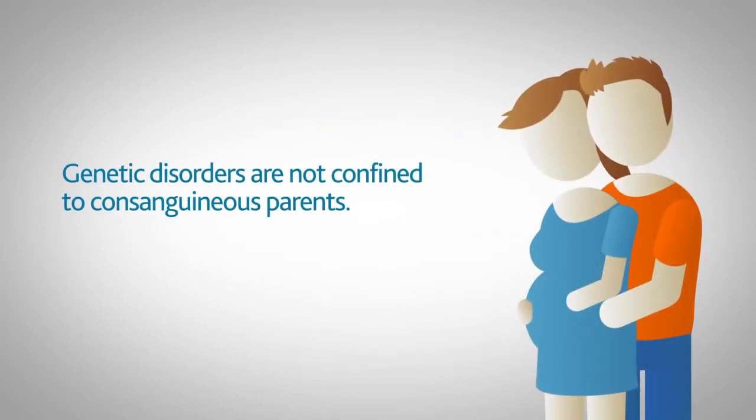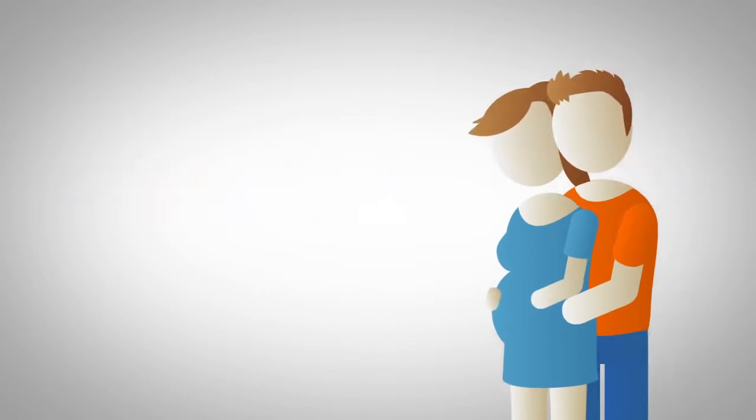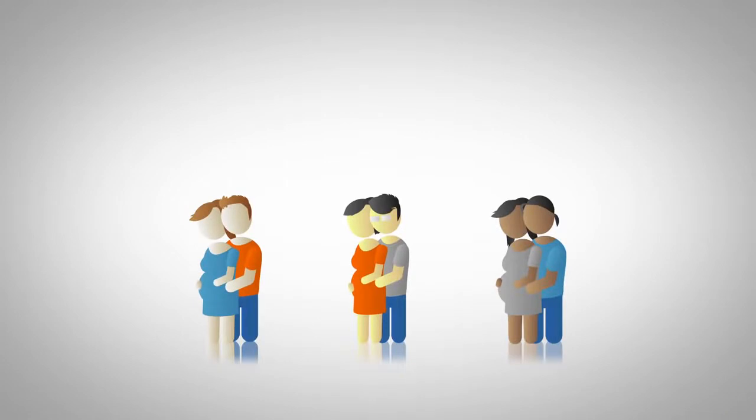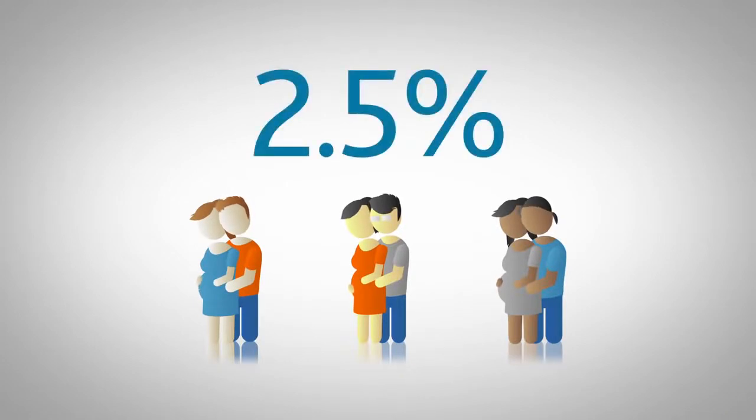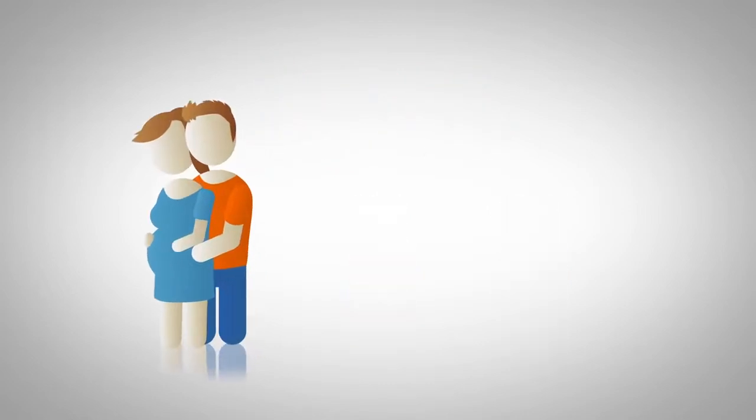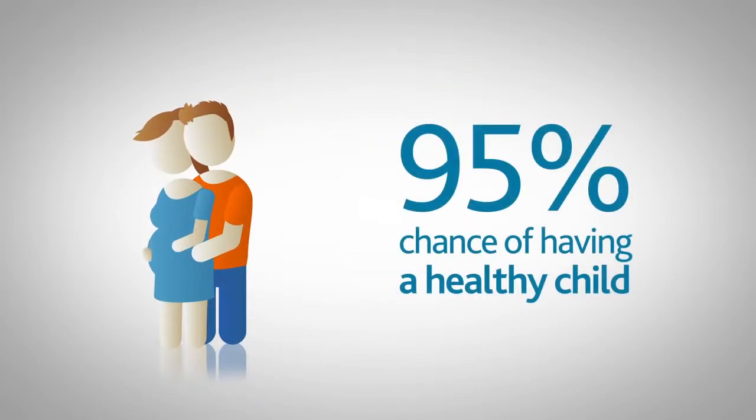Genetic disorders are not confined to consanguineous parents. The risk of genetic disorders in the general population is 2.5%. So while consanguinity does double the risk, first cousins still have a 95% chance of having a healthy child.